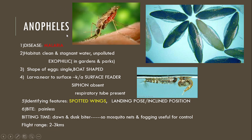First we will see the Anopheles mosquito. Anopheles mosquito causes the disease called malaria. It lives in clean and stagnant water which is unpolluted. It is exophilic and lives outside in gardens and parks. The shape of eggs is single, boat-shaped — as we can see here, boat-shaped eggs. The larvae reside below the surface of water, known as surface feeders.